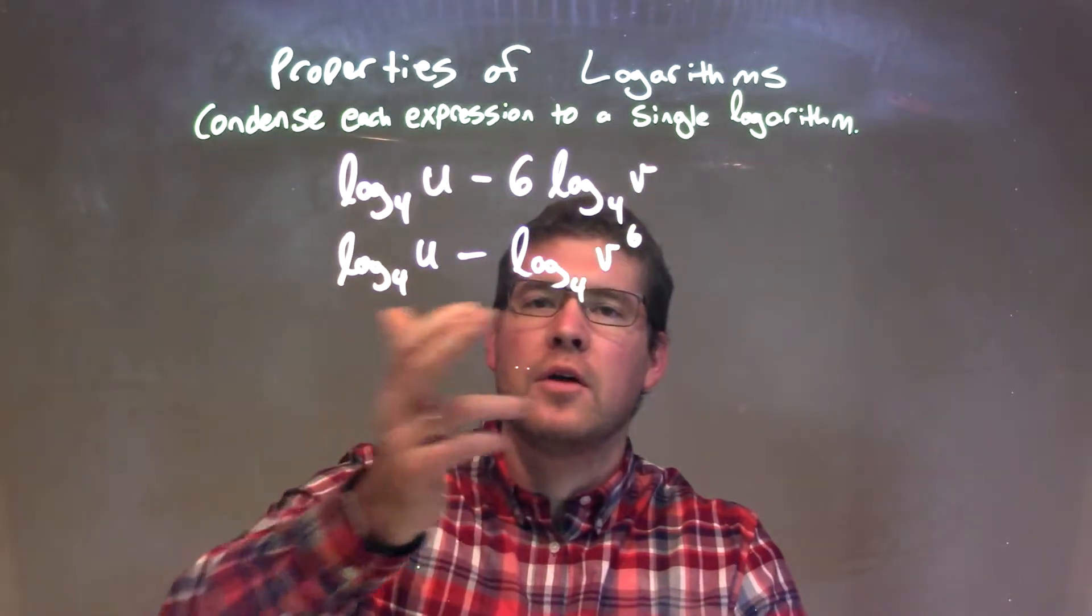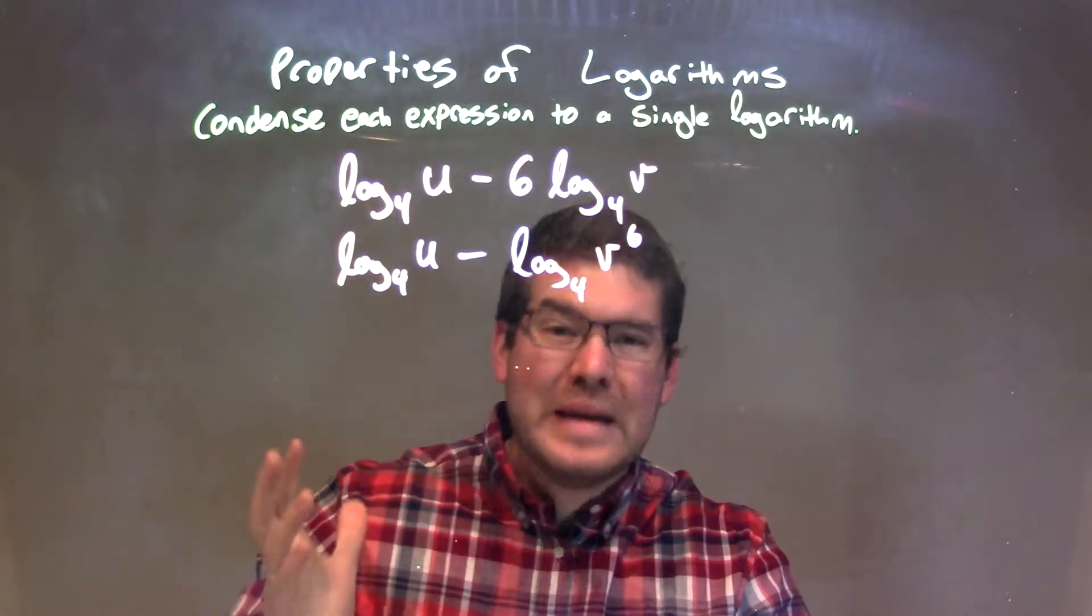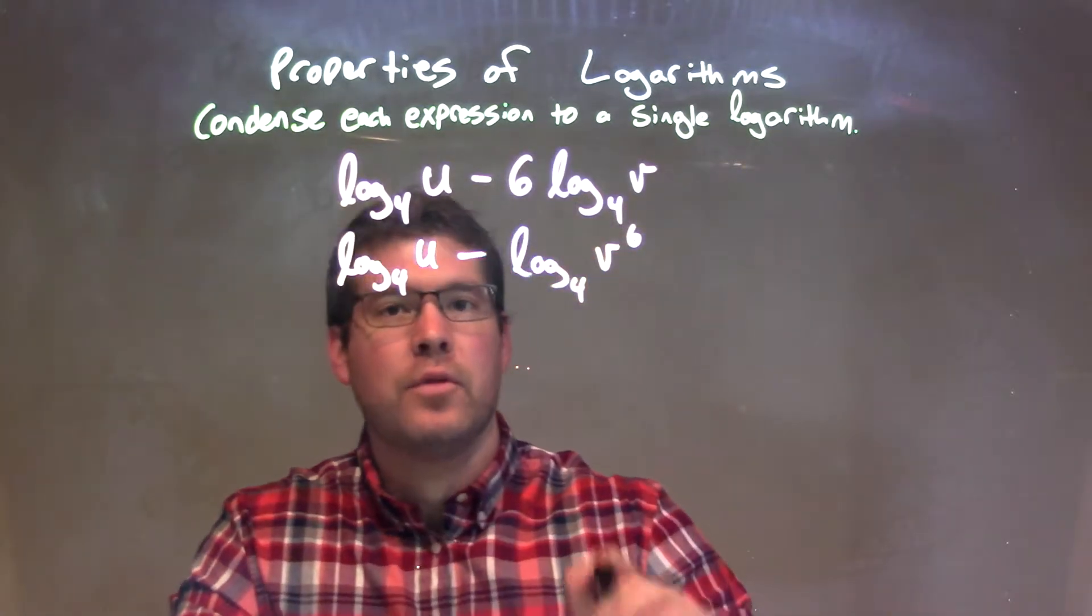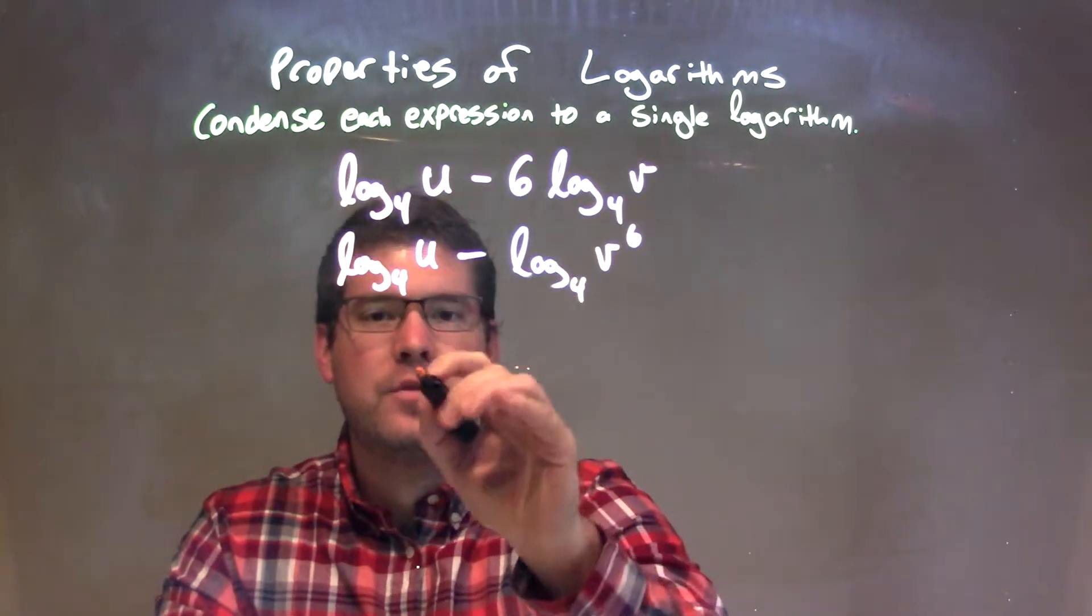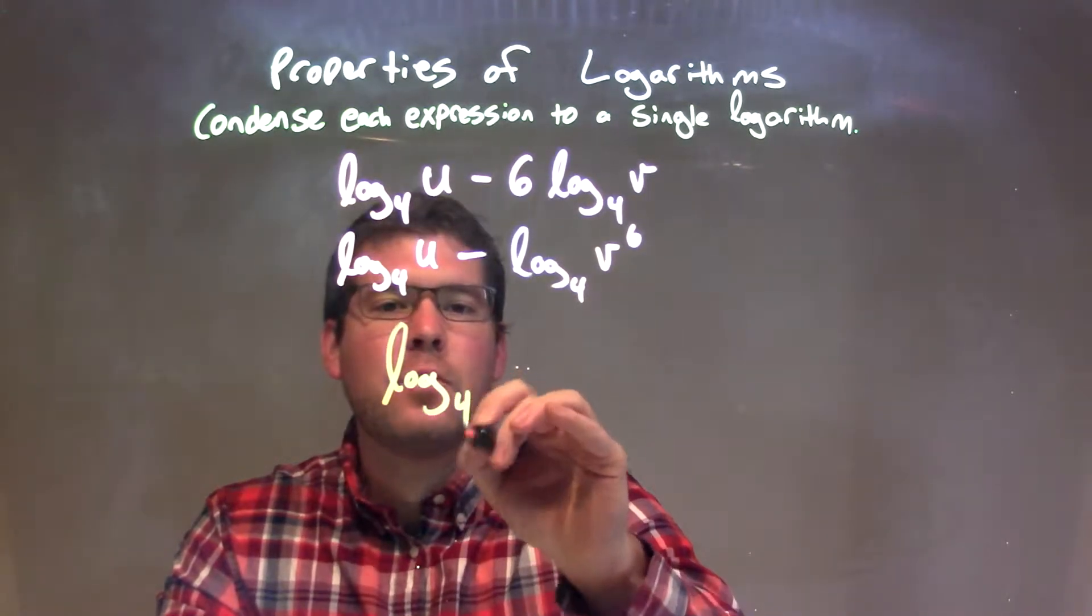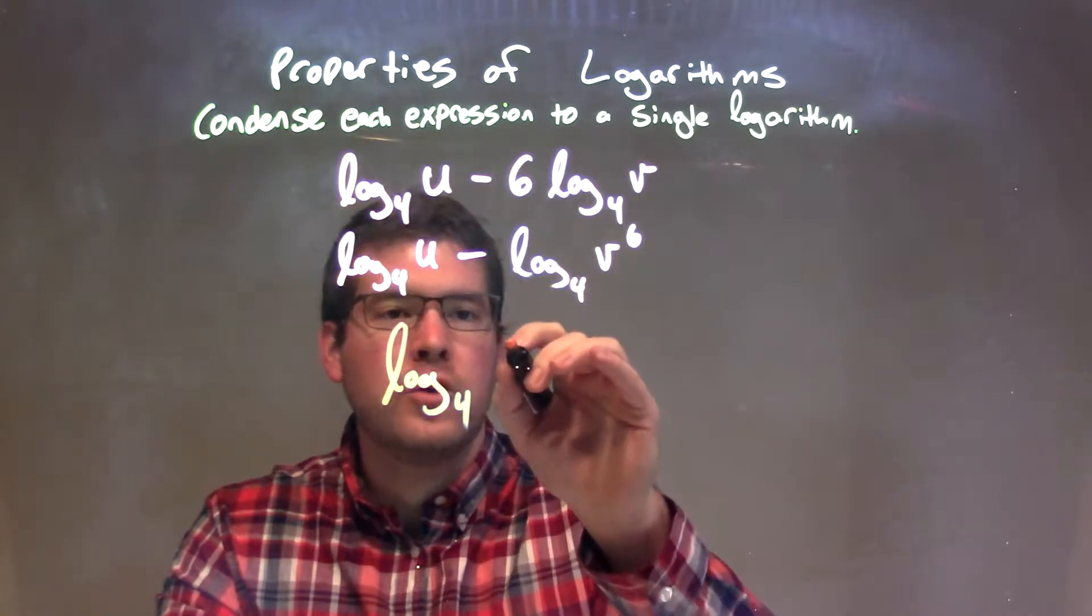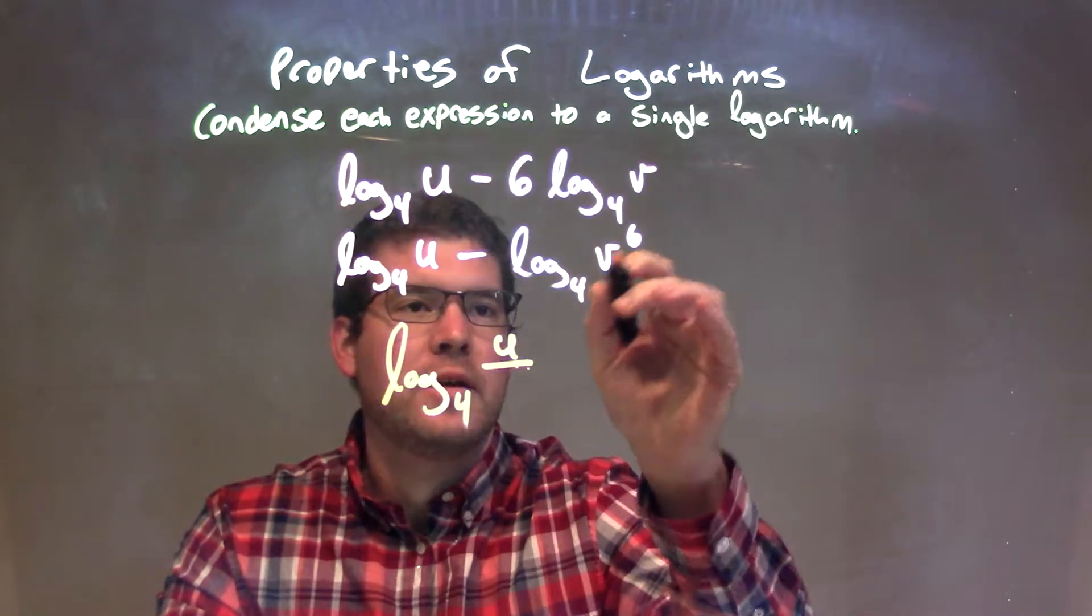Now, we have our logs that both have the same base of 4. We can condense that to be one big logarithm by looking at that subtraction, and we're going to turn that into a division. So, under one big logarithm, log base 4 of the numerator, u, divided by the denominator, v to the 6th power.